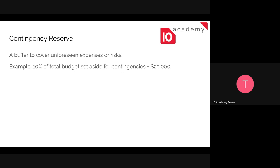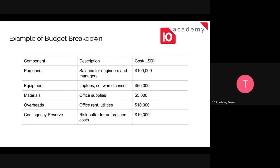Contingency reserve is a buffer to cover unexpected or unforeseen expenses and risks. For example, we can set aside ten percent of our total budget for contingencies. If the total budget is two hundred fifty thousand dollars, that means twenty-five thousand dollars goes to contingency. This percentage may differ according to the project and company.